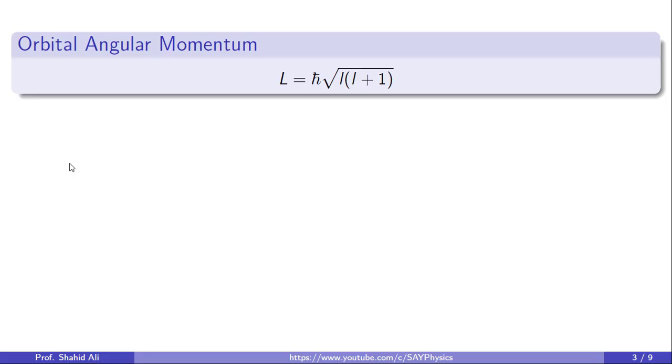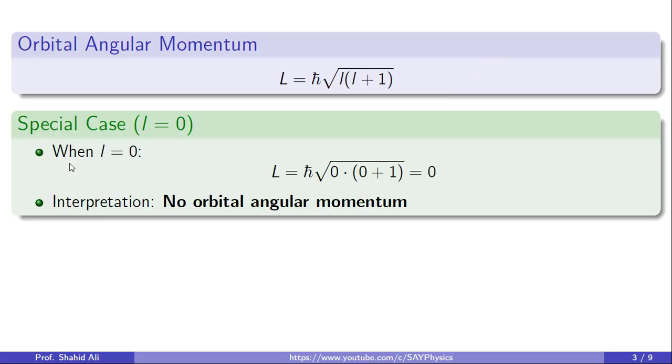Let us now focus more closely on the formula for orbital angular momentum. As shown here, the magnitude of angular momentum in quantum mechanics is given by L equal h bar square root l into l plus 1. This formula arises from solving the Schrödinger equation for central potentials like the hydrogen atom. Now, let us consider the special case when the orbital quantum number l is 0. Plugging it into the formula, we get L equal h bar square root 0 into 0 plus 1 equal to 0. This clearly tells us the orbital angular momentum is 0. There is no angular momentum contribution from the electron's motion in this state.